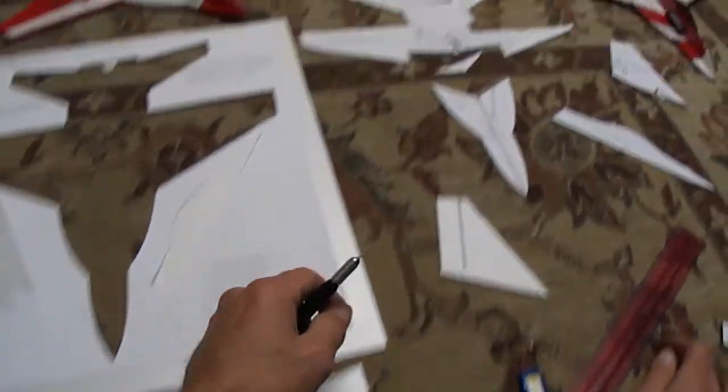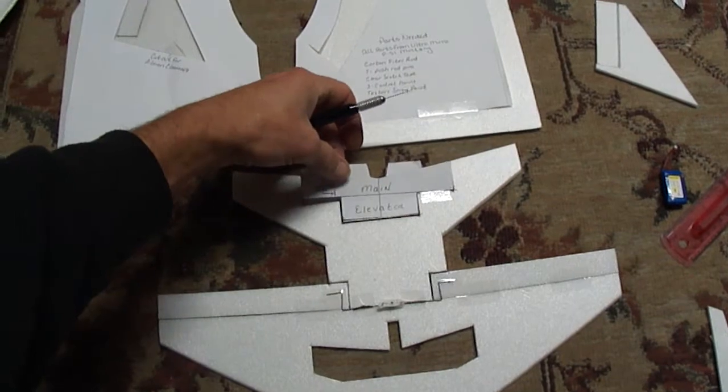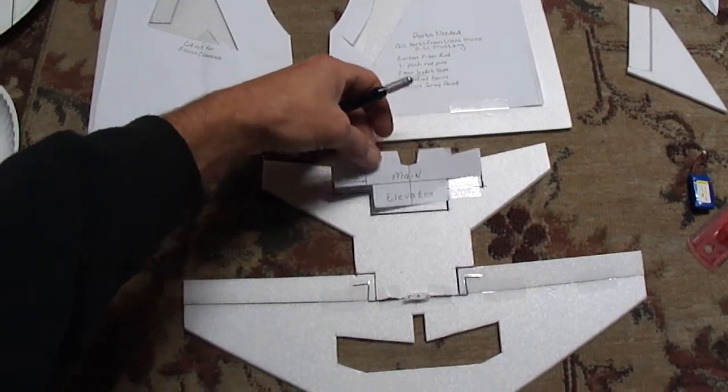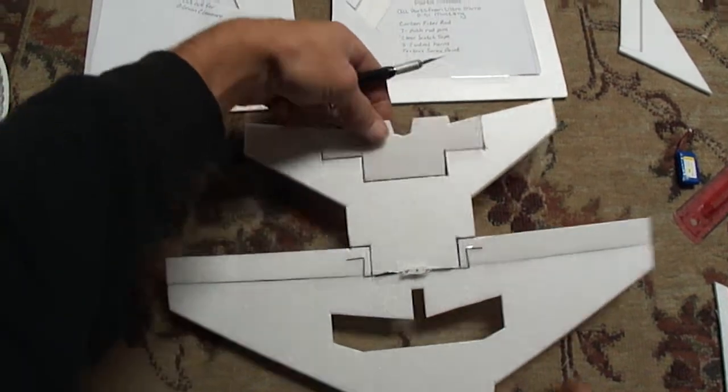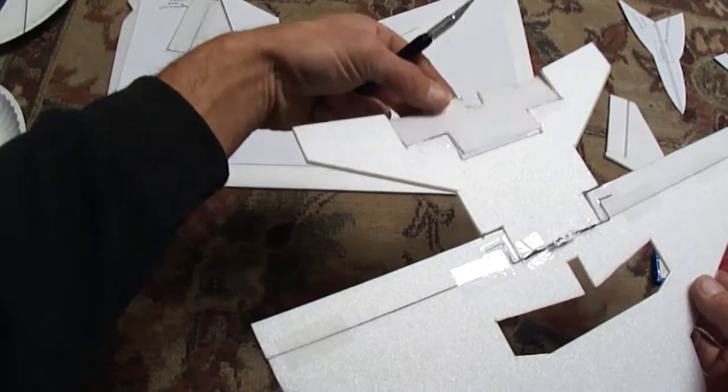Alright, so after the ailerons, we went ahead and did our main elevator. Cut it, hinged it. There's your thrust vector nozzle.